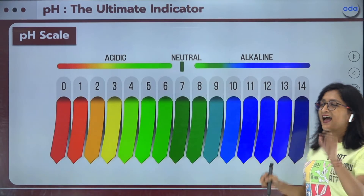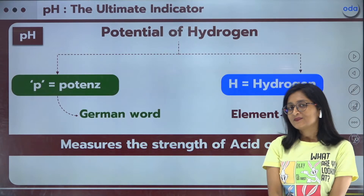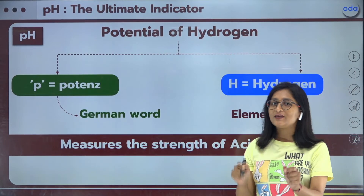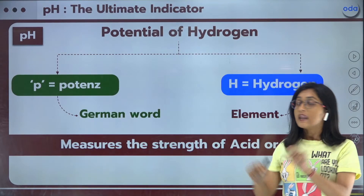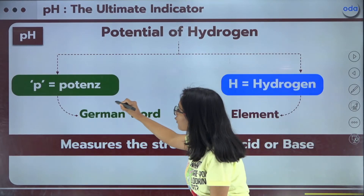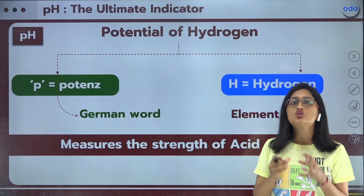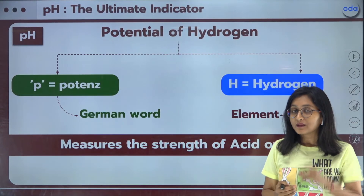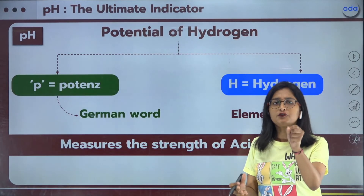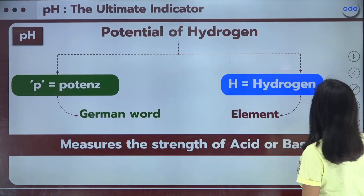pH is abbreviated for the Potential of Hydrogen. The word 'potential' has been derived from the German word 'potenz.' And hydrogen — we all know it is the very first element of the periodic table.